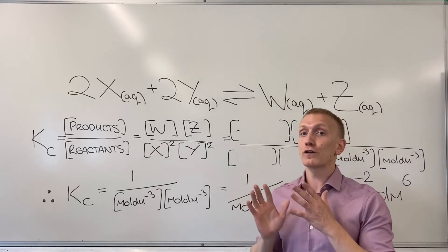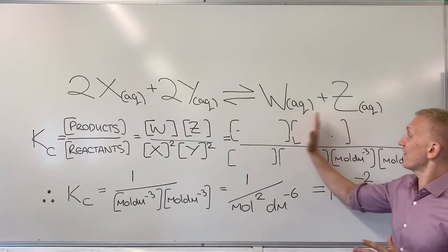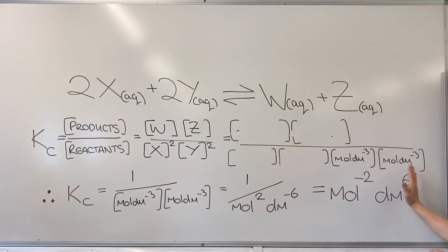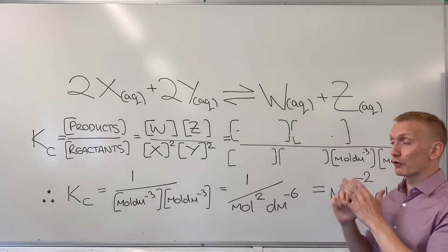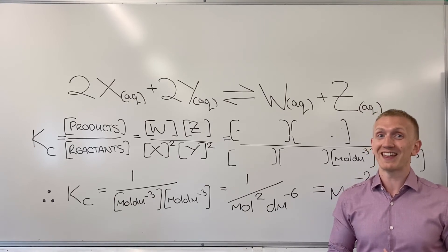For Kc you can sometimes end up with no units. And that will happen if everything cancels out at this stage just here. You can end up with a really weird mix of units as well. Where you can have mole which could be cubed or you could end up with negative values like this one. Don't worry about it. Just follow the rule set each time and you'll see that some are more common than others in the exam.